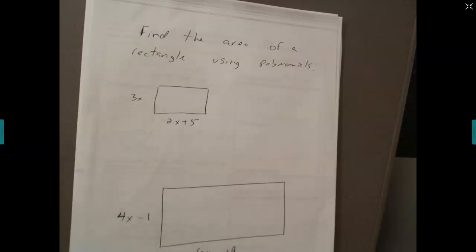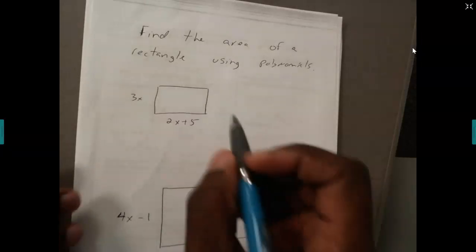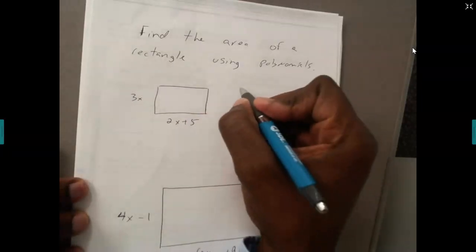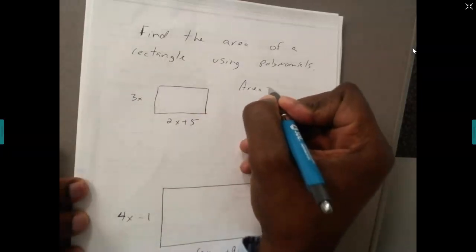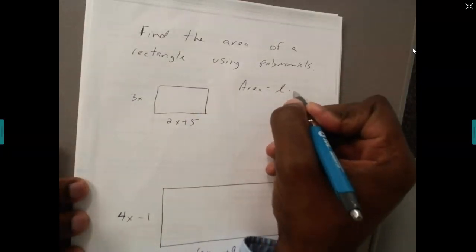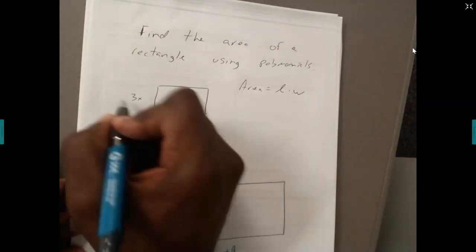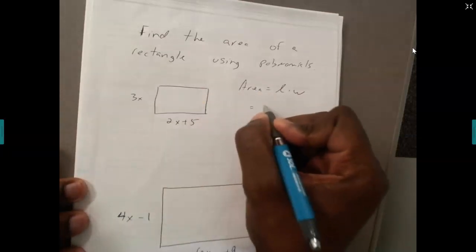This video is about finding the area of rectangles using polynomials. First, find the area of this rectangle. The area of rectangles is length times width. I'm going to say this is my length and this is my width.